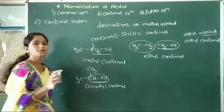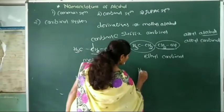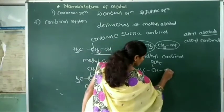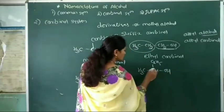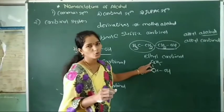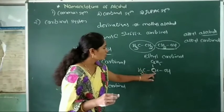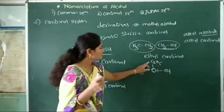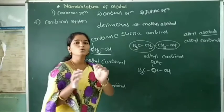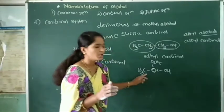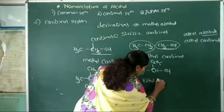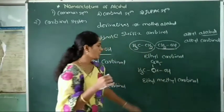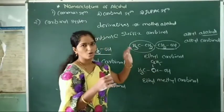Now consider another example where the carbynol carbon is attached to one methyl group and one ethyl group. In this case, the name of this carbynol is written in alphabetical order. Carbynol names are arranged alphabetically, so we write ethyl first, then methyl, followed by the suffix carbynol. Therefore, the name of this carbynol is ethyl methyl carbynol.